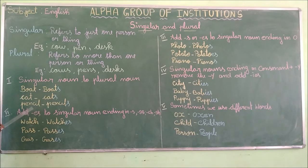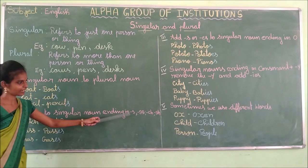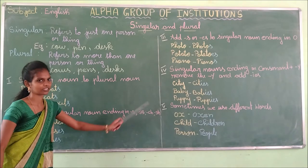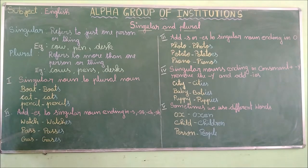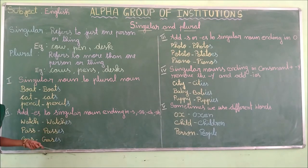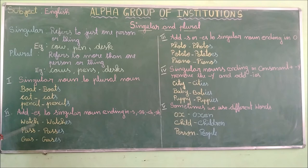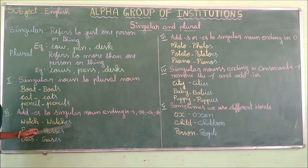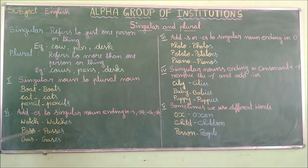Second rule: add ES to singular nouns ending in S, SS, CH, or SH. For example, watch ends with CH — W-A-T-C-H — so we add ES to make it plural: watches. Also: pass→passes, gas→gases.